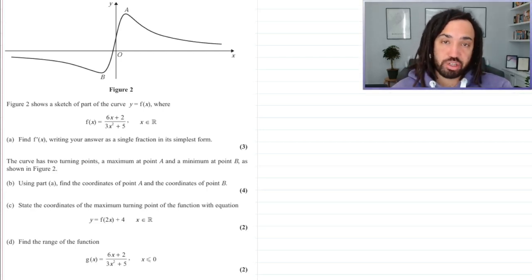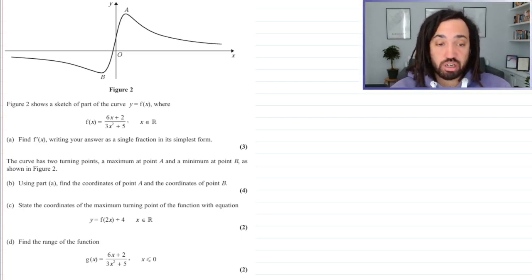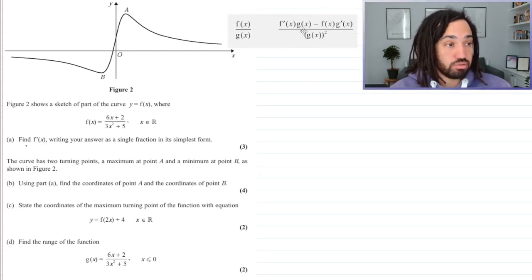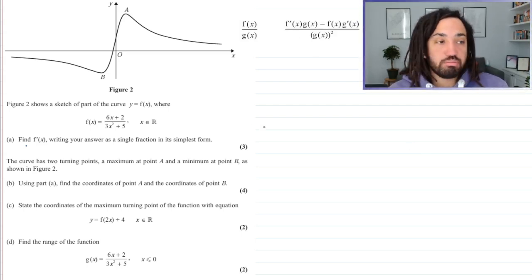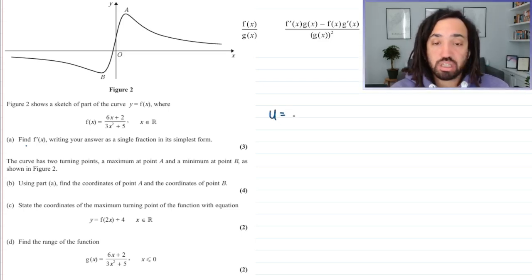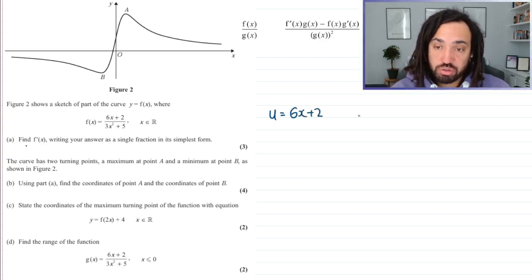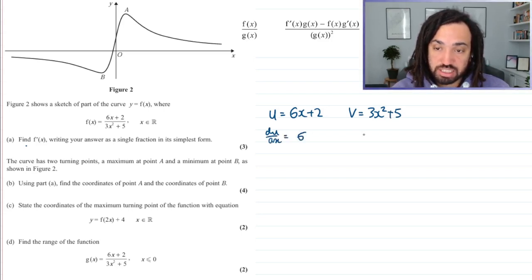Hello, my name is Mr. Asprey and for today's tricky question we have this lovely looking function. First, we are asked to find the derivative. It's a fraction function so we need to use the quotient rule. Here is the quotient rule as given in your formula booklet, but personally I prefer to use u and v. So we say u is the numerator function which is 6x plus 2 and v is the denominator which is 3x squared plus 5. We then need to find the derivative of each of these, so that is 6 and this here is 6x.